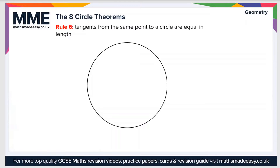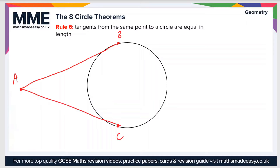Rule six: tangents from the same point to a circle are equal in length. Let's draw a point outside the circle — call it point A — and a point on the circle called point B, and another called point C. Drawing a tangent from A to B and another from A to C, these two tangents will be equal in length, so AB equals AC.